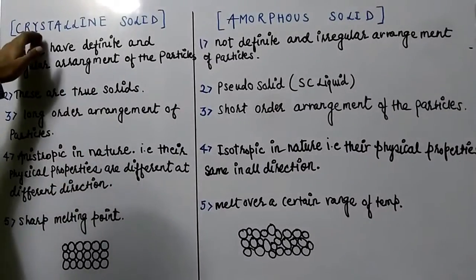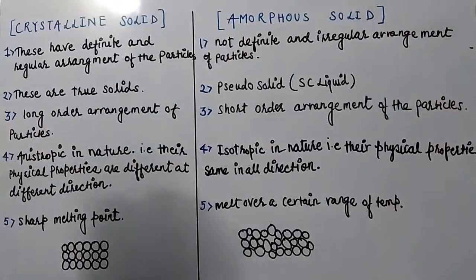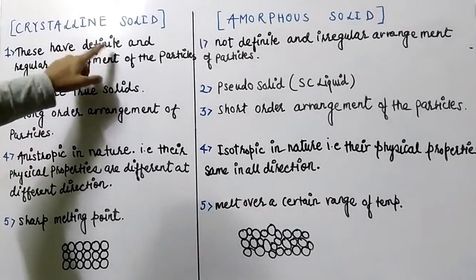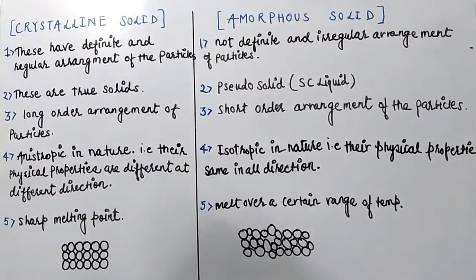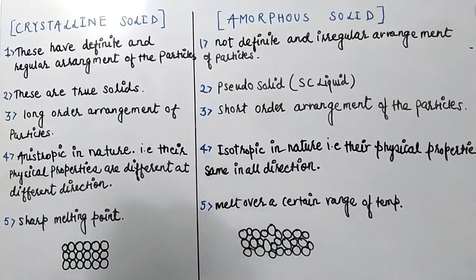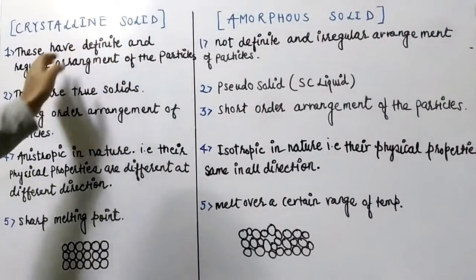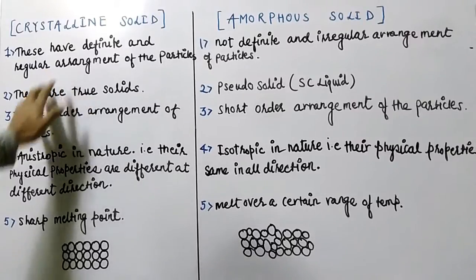Let's start. Crystalline solid and amorphous solid. Basically I will tell you about crystalline solid and amorphous solid and their properties. Crystalline solids have a definite and regular arrangement of particles — definite and regular arrangement, like this.